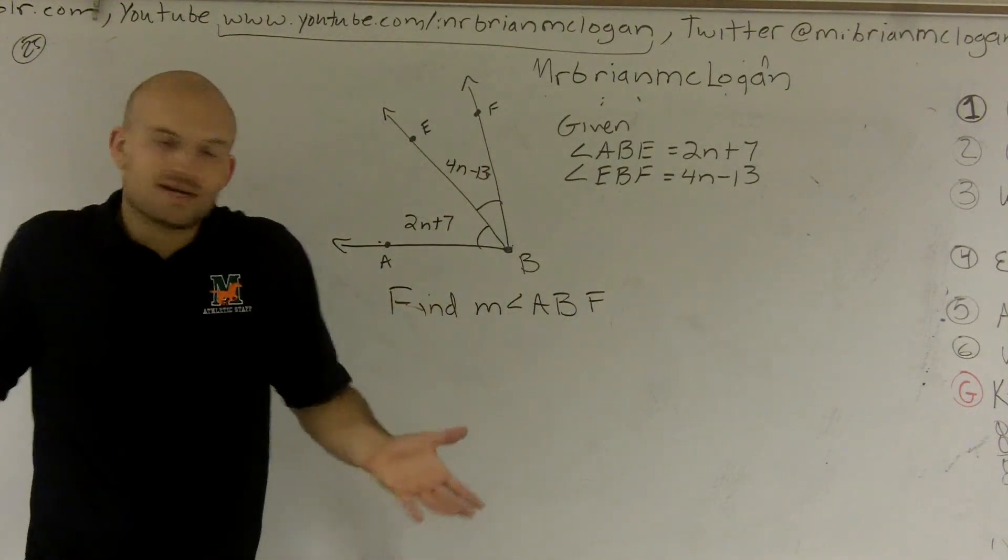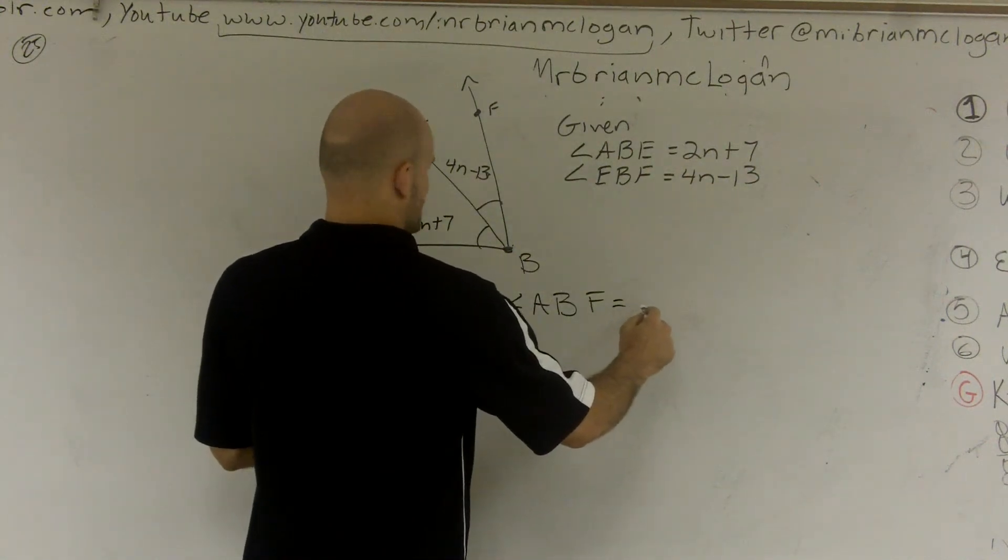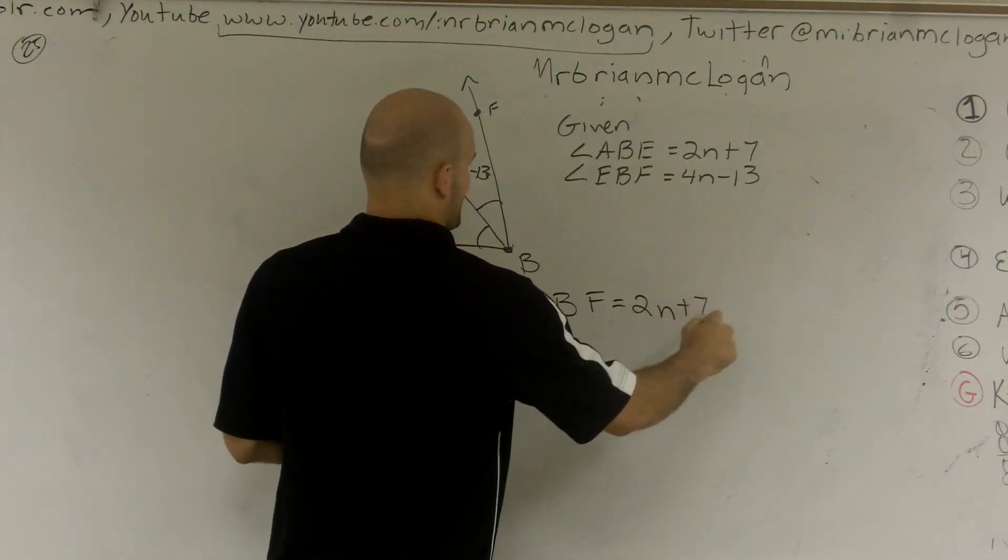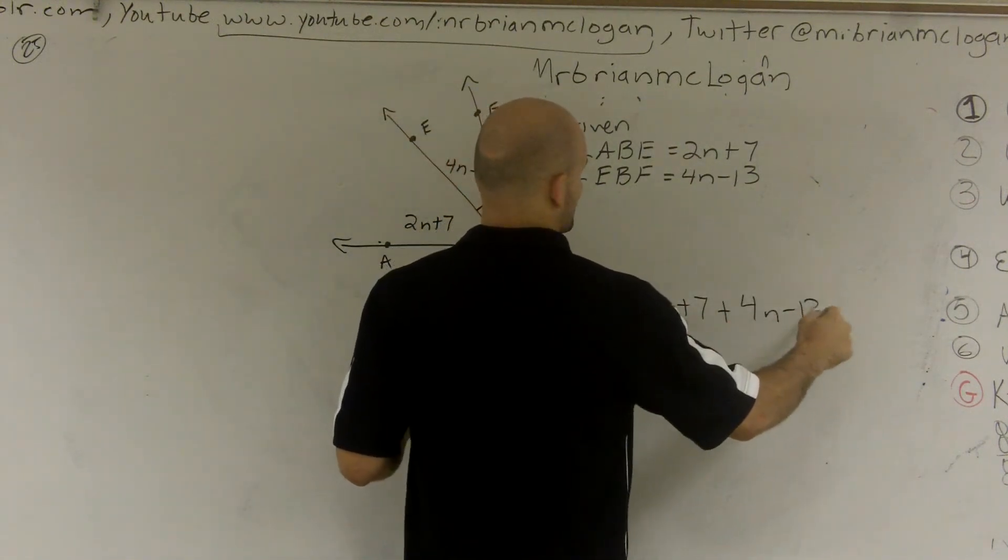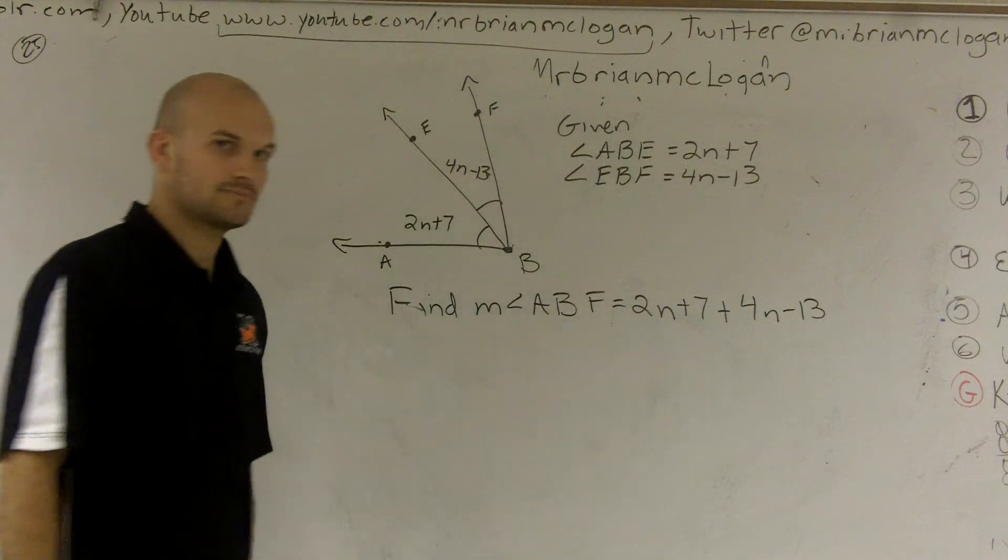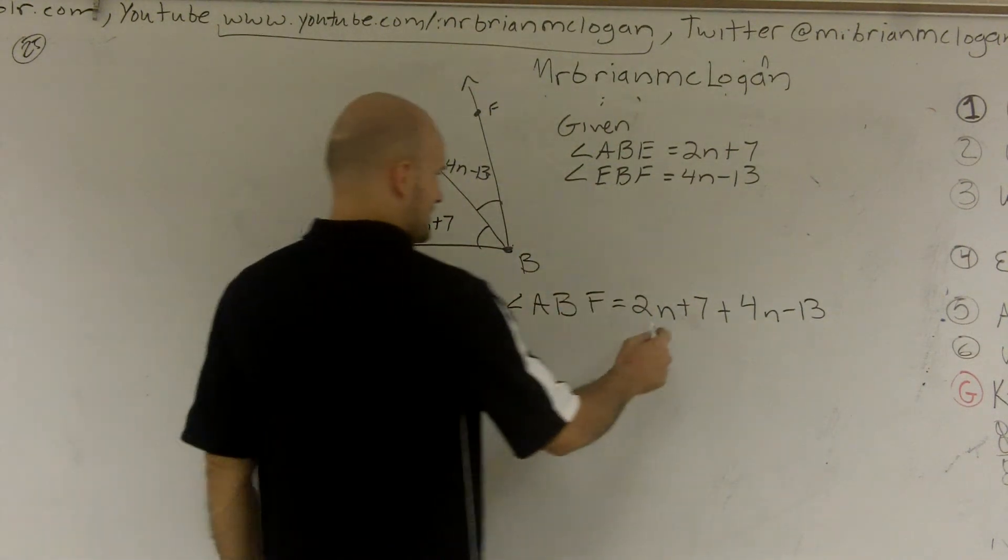But we're going to do the same operation. We say measure of angle ABF is equal to 2N plus 7 plus 4N minus 13. All right? So now I can combine like terms.